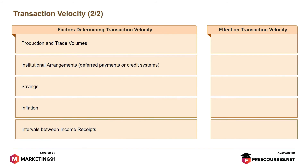Factors determining transaction velocity are: increase in production and trade volumes results in increase in transaction velocity; increase in institutional arrangements such as deferred payments or credit systems leads to decrease in transaction velocity; increase in savings leads to decrease in transaction velocity; increase in inflation results in increase in transaction velocity; and increase in intervals between income receipts leads to decrease in transaction velocity.